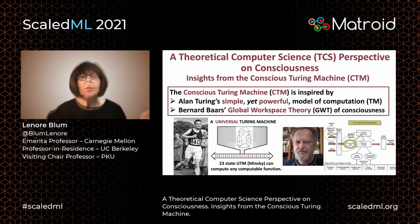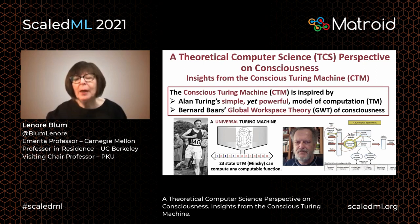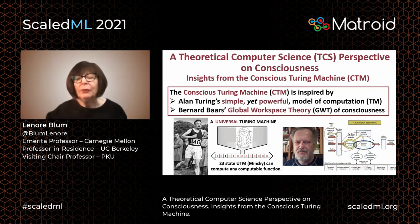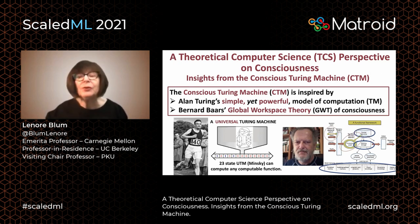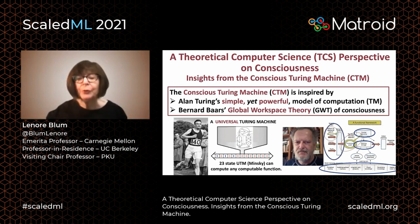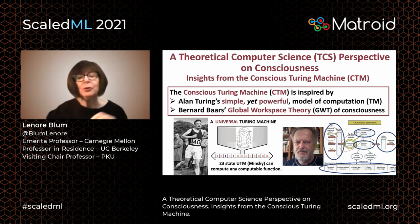What's going on? Getting back to Baars' global workspace theory. On the lower right we have his sketch of the global workspace. In the center there is a working storage — that's the stage. Down below is an enormous collection of long-term memory processors — that's the audience. On top we have the central executive, maybe the stage manager, the drama director. On the left, we have input coming from the outside world through sensors to working storage. On the right, we have output going from working storage through actuators to the outside world.